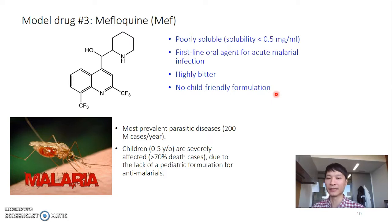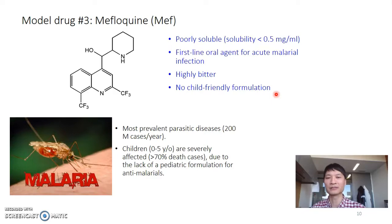Malaria is the most prevalent parasitic disease in the world, accounting for 200 million cases per year. Because there is no child-friendly formulation, children under the age of five are the most affected population, accounting for 70% of death cases per year — a very significant problem.